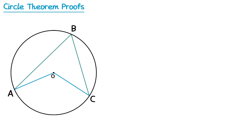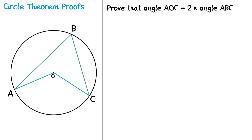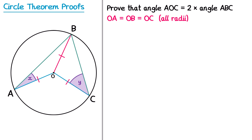Now let's look at our second proof: the angle at the centre is twice the angle at the circumference. The question might say, prove that angle AOC is equal to 2 multiplied by angle ABC. We're going to start by drawing in a radius from O to B, and we can see that OA, OB, and OC are all radii, so OA equals OB equals OC. Next we're going to mark on two angles: this angle here we'll call X, and this angle here we'll call Y. So let angle AOB equal X and angle OCB equal Y.